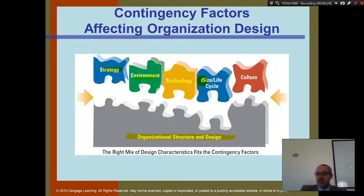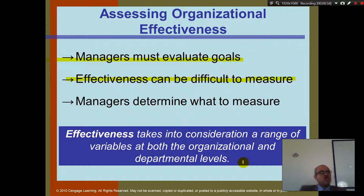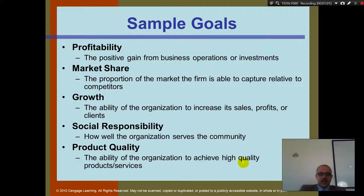Other contingency factors include environment, technology available, lifecycle, and culture. Assessing organizational effectiveness is also critical — managers must evaluate goals, but effectiveness can be difficult to measure. Managers determine what to measure, and effectiveness takes into consideration a range of variables at both the organization and department levels.